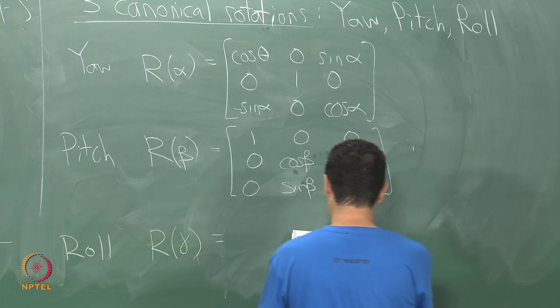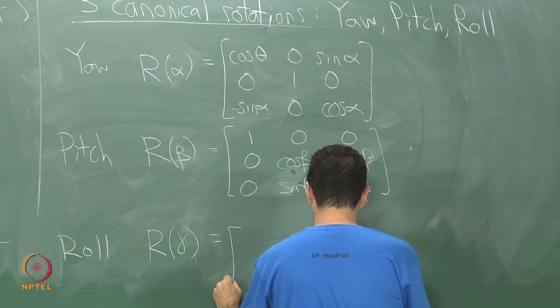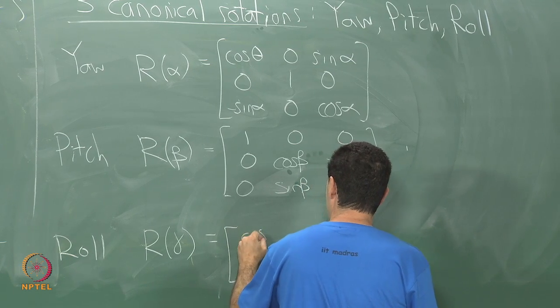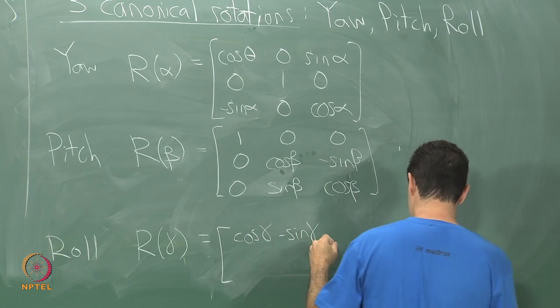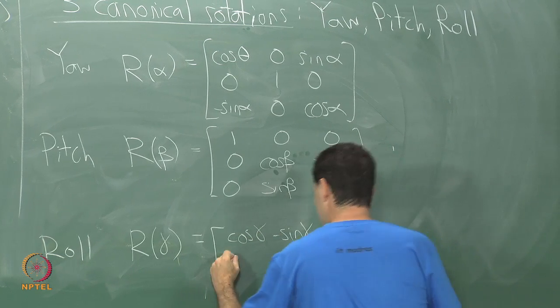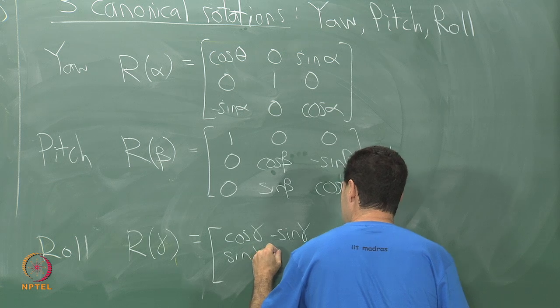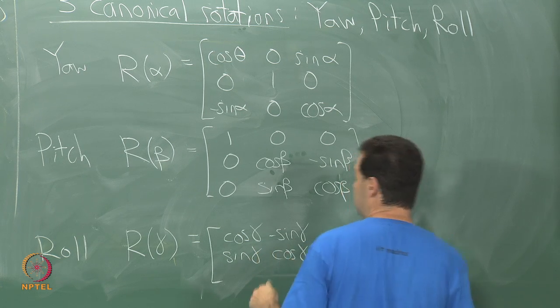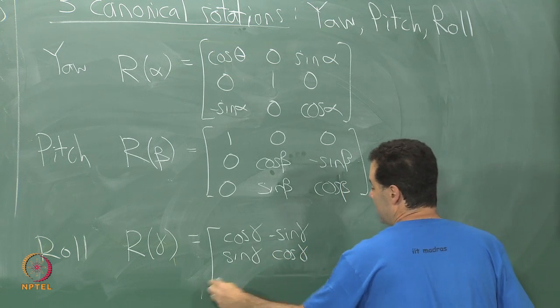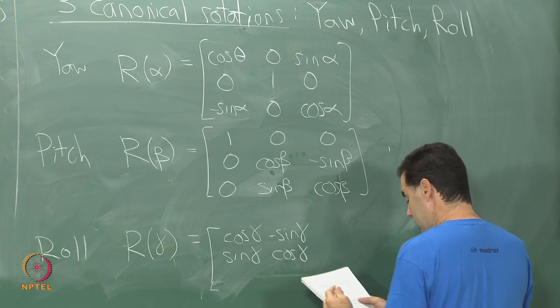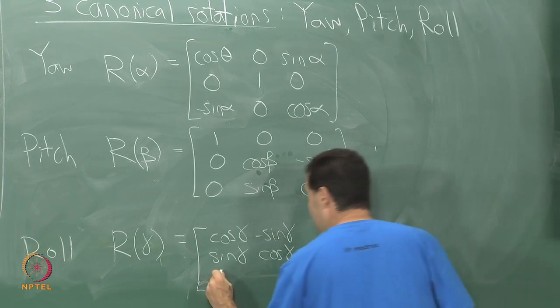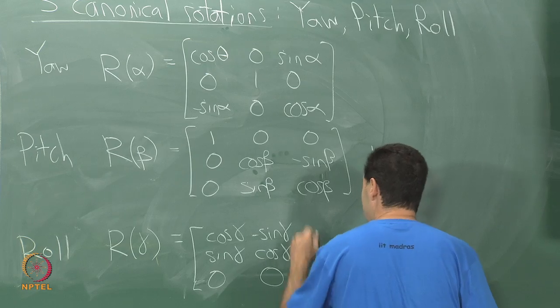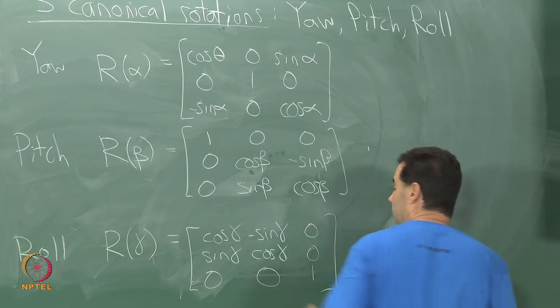And then finally, roll. Roll should leave the z coordinate alone then, right? Z is going back and forth, z is the depth. Z goes back and forth when I do a roll. I should not be interfering with that. We did alpha, beta, gamma. We will make gamma the parameter for that. We get cosine gamma, minus sine gamma.